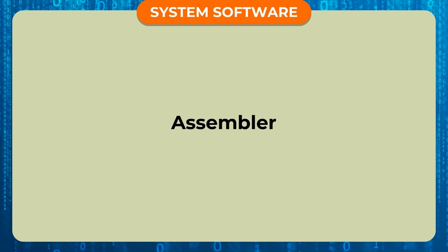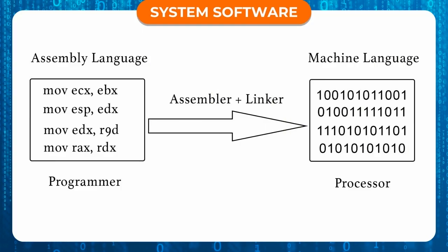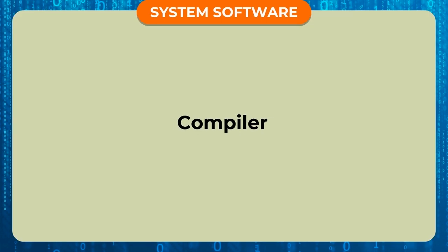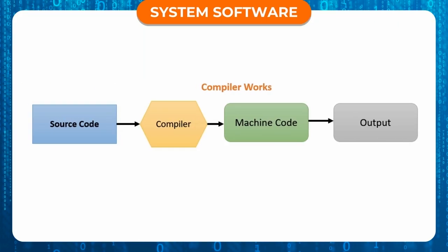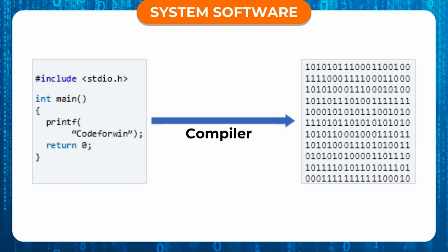Assembler is a translator which converts the assembly language program into machine language. Compiler translates a program written in high-level language into machine language and vice versa. It translates the whole program in one go.